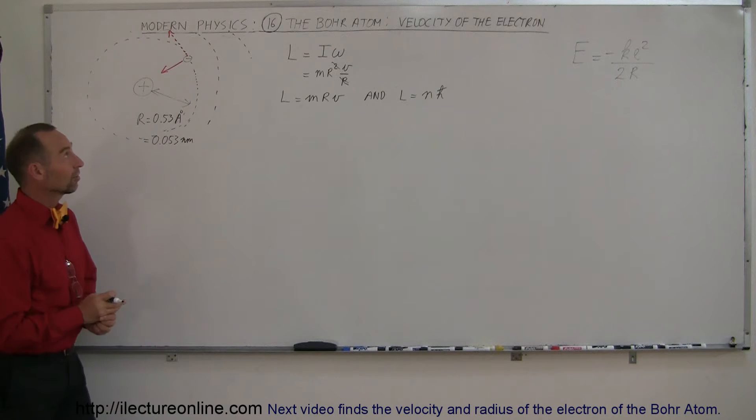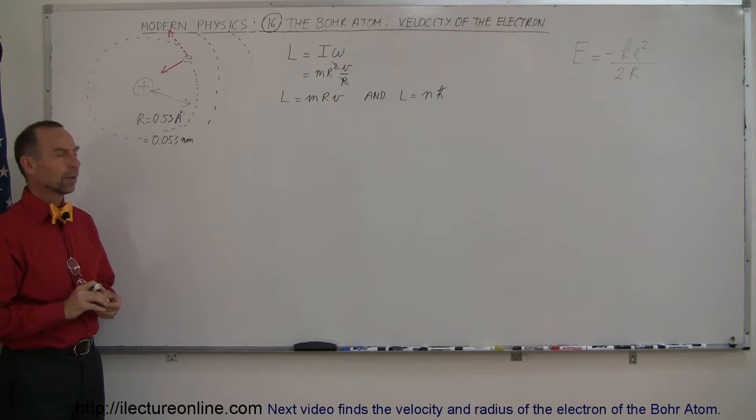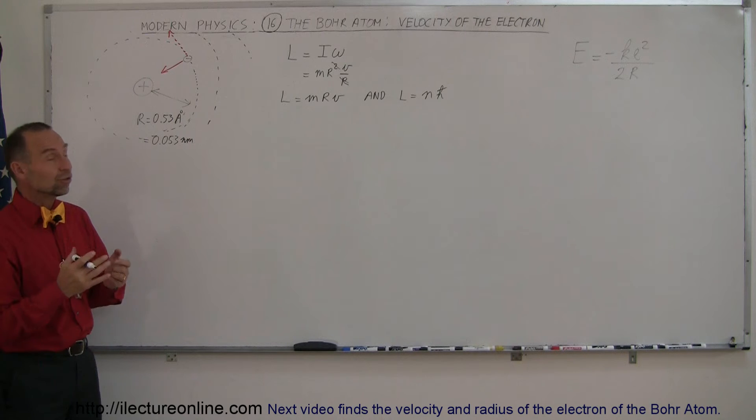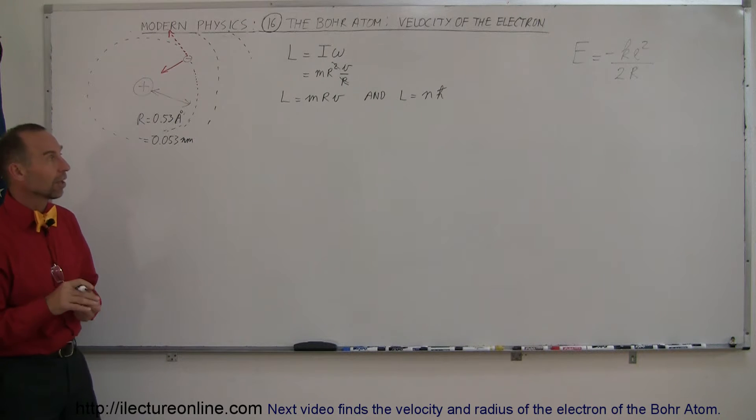All right, our next topic in modern physics. We're still dealing with the Bohr atom, but now we're going to look at the velocity of the electron in the orbit around the nucleus. We've already determined the radius, we've also determined the energy of the electron. Now let's find the velocity of the electron.